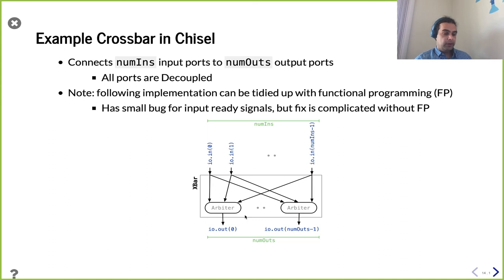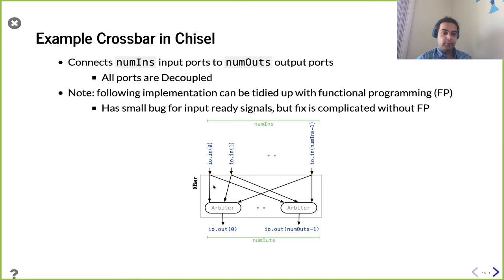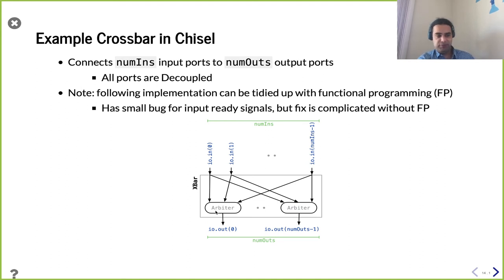Each input potentially can send to each output, and these outputs choose via their own arbiter. This works out really smoothly because we can use the abstractions we've already built up — these are decoupled coming into the inputs, the arbiter inputs are decoupled. If we wanted to add queuing, we could simply insert a queue between the input and its outputs. Remember, a queue also supports decoupled — that's a very simple add-on.